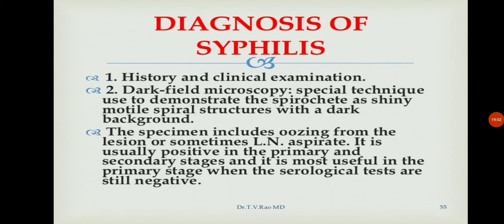The diagnosis of syphilis involves a blood test. The presence of spirochetes in the blood or in sores indicates the presence of the disease. Penicillin is the main drug used to treat syphilis. Diagnostic methods include history and clinical examination, dark-field microscopy — a special technique used to demonstrate spirochetes showing their spiral structures against a dark background. The specimen includes a sample from the lesion. This method is usually positive in primary and secondary stages and is most useful in the primary stage when serological tests are still negative.